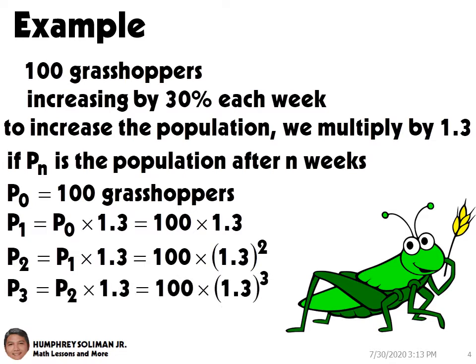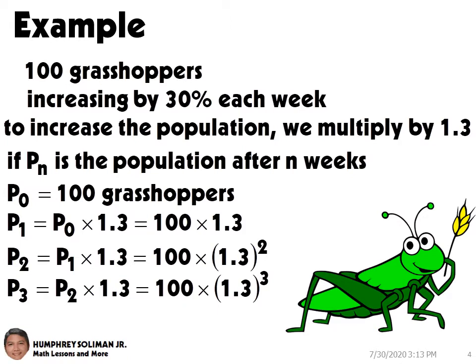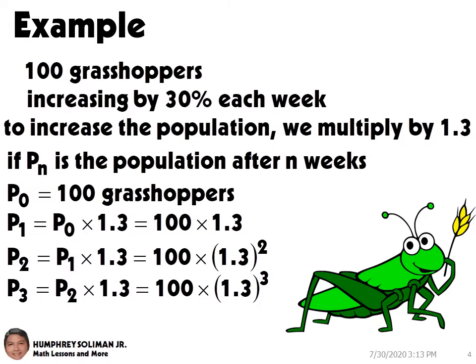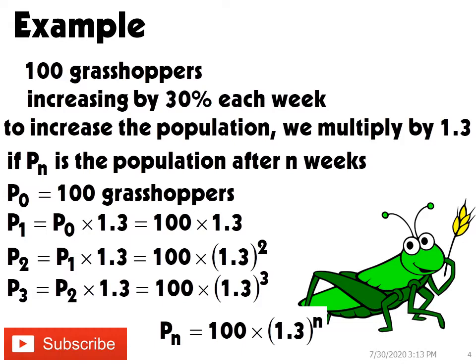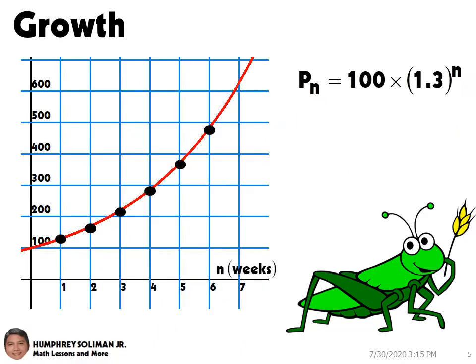Then after three weeks, P3 equals P2 times 1.3, so 100 times 1.3 cubed, and so on. From this pattern we see that the population after n number of weeks, Pn, is equal to 100 times 1.3 raised to n. So the graph of the population is a smooth curve modeled by the exponential function Pn equals 100 times 1.3 raised to n.